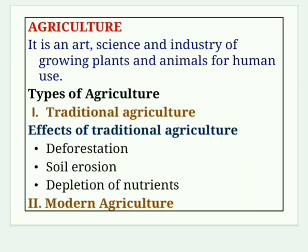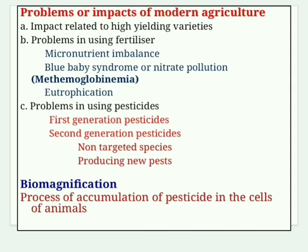Modern agriculture makes use of hybrid seeds of single crop variety along with high-technology equipment, fertilizers, pesticides, weedicides and water to produce large amounts of single crops. Green revolution became possible only with modern agriculture. Problems are divided into three: impact related to high-yielding varieties, problems in using fertilizers, and problems in using pesticides.